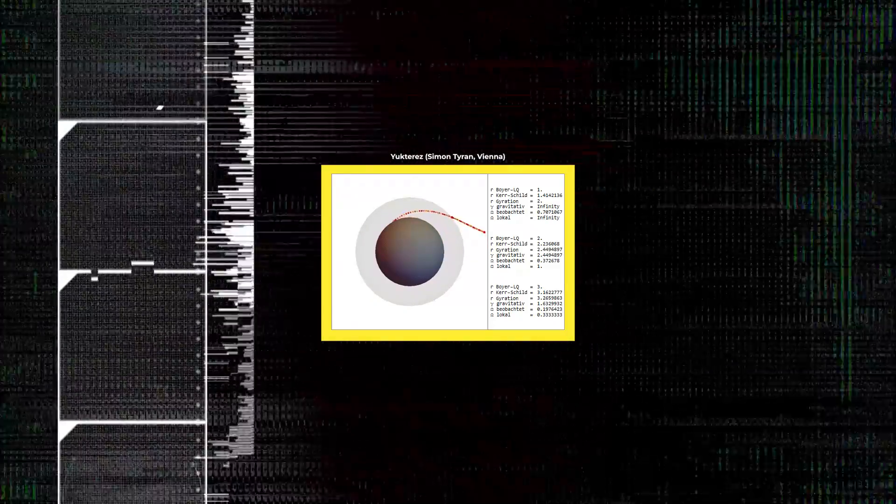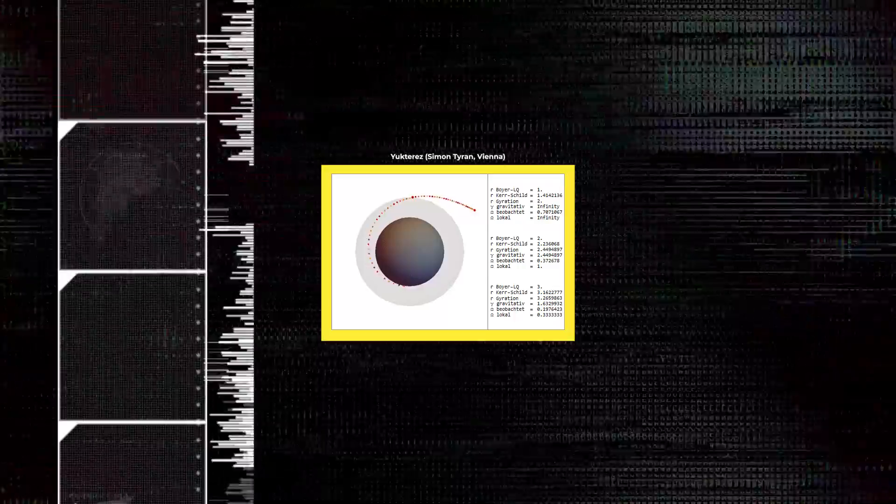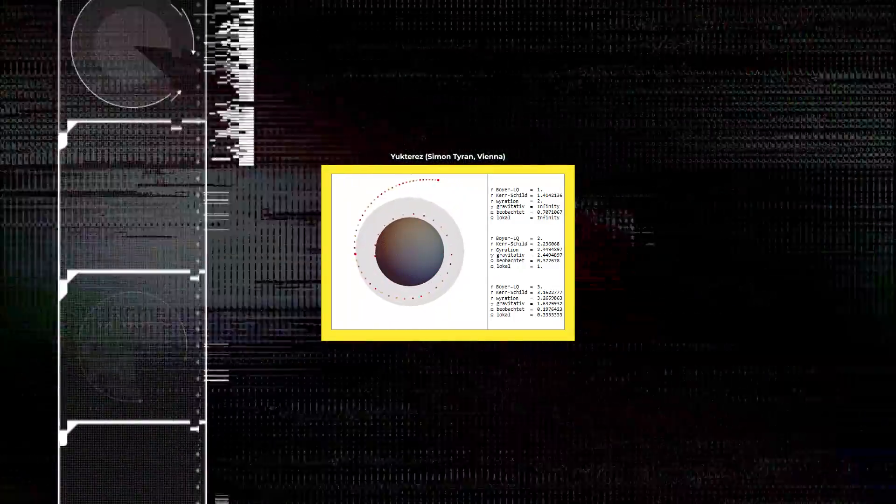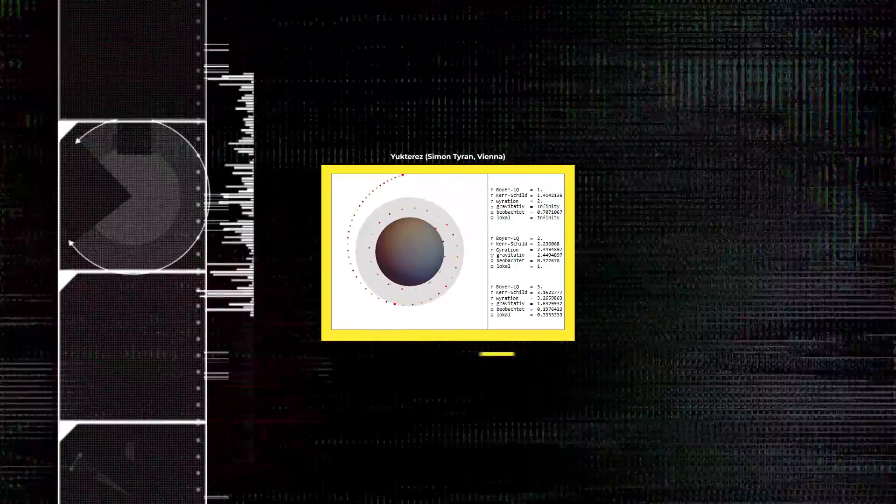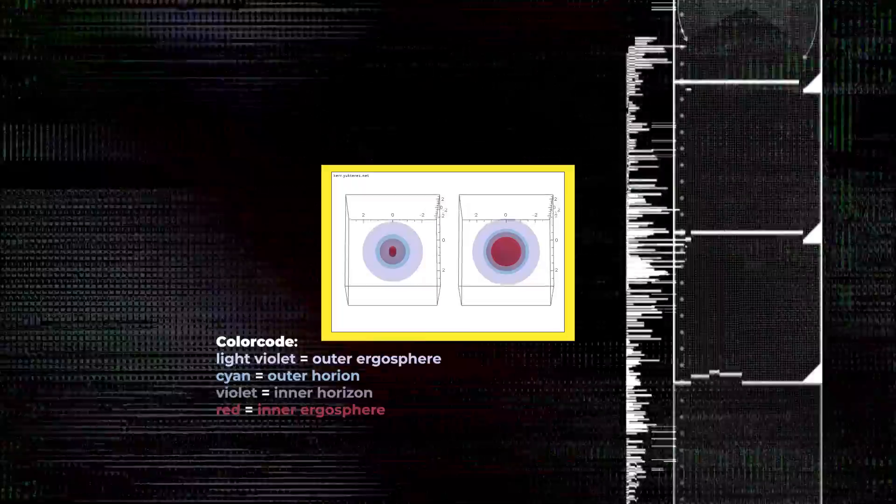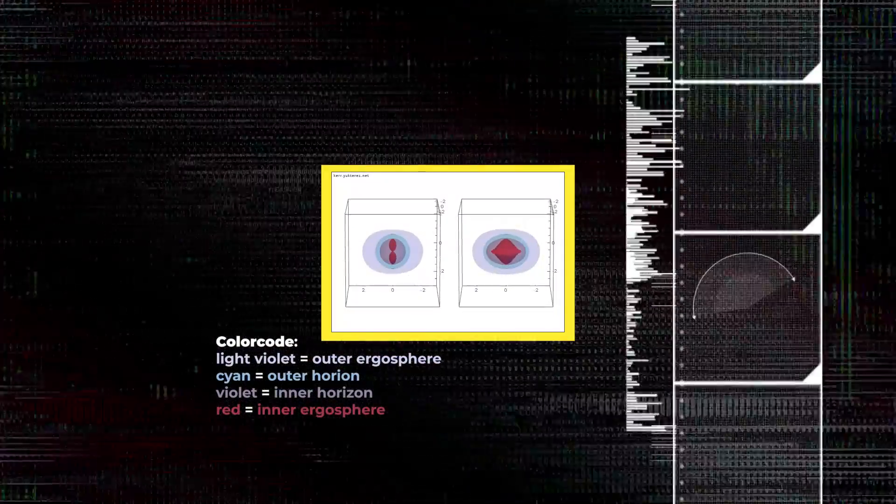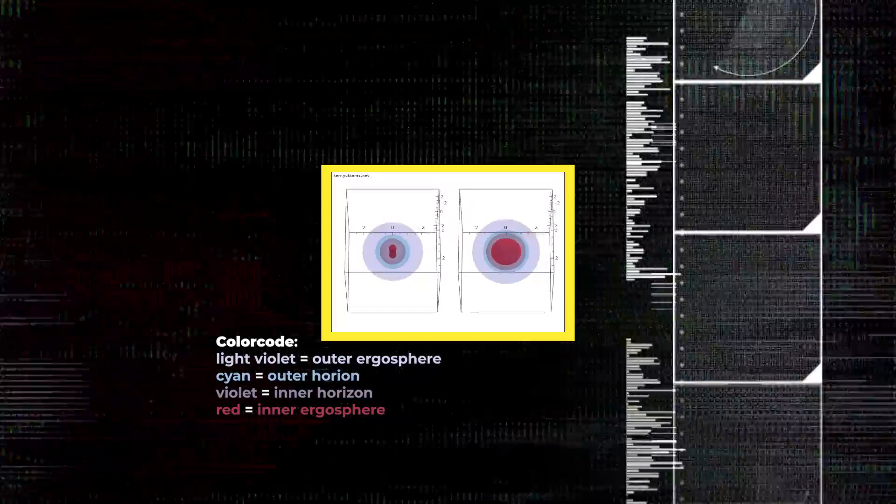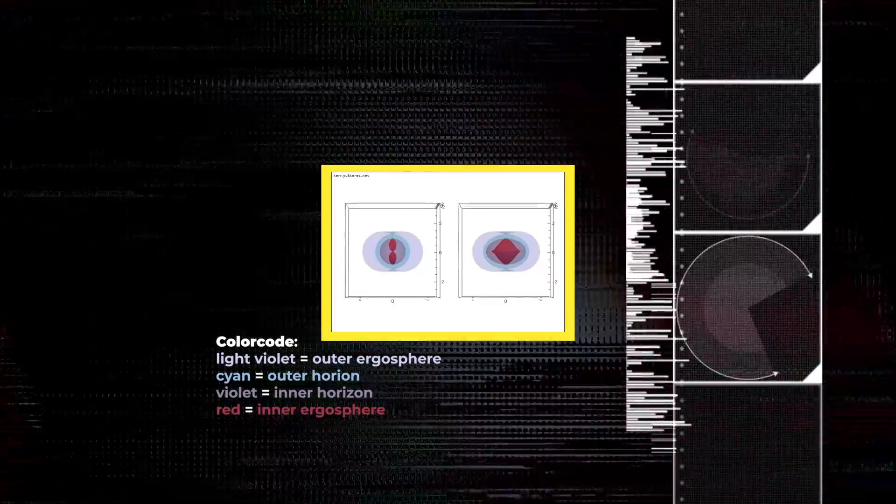Big spinning objects drag spacetime around them. A black hole does that too, but to a greater extent. It drags and twists spacetime in a circle around it. This is known as frame dragging. The ergosphere, within which an observer is forced to rotate with the black hole, touches the event horizon at the poles of a rotating black hole, and extends to a greater radius at the equator.